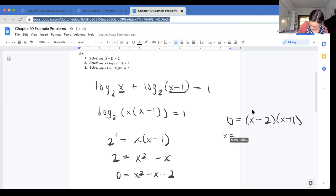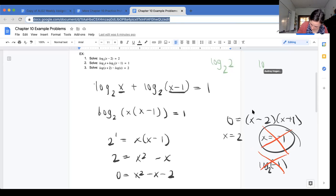So then I know x equals 2 and x equals negative 1. However, if I plug in negative 1, I'm going to have log base 2 of negative 1, which is a no-go. So I cannot have negative 1 as a solution. But if I plug in 2, I have log base 2 of 2 and log base 2 of 2 minus 1, which is log base 2 of 1. So I'm good there. So x equals 2 is a good solution.